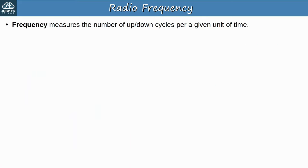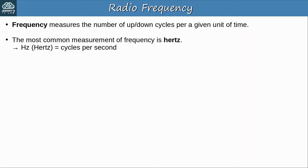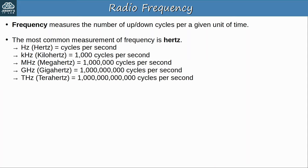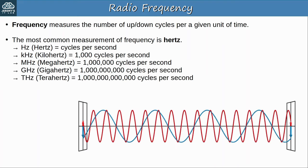Frequency measures the number of up-down cycles per a given unit of time. The most common measurement of frequency is hertz, simply the number of cycles per second. Then of course there are kilohertz (thousands of cycles per second), megahertz (millions), gigahertz (billions), and terahertz (trillions of cycles per second). Two waves can have the same amplitude but different frequencies — the red one with a higher frequency goes through more cycles per second than the blue one with a lower frequency.